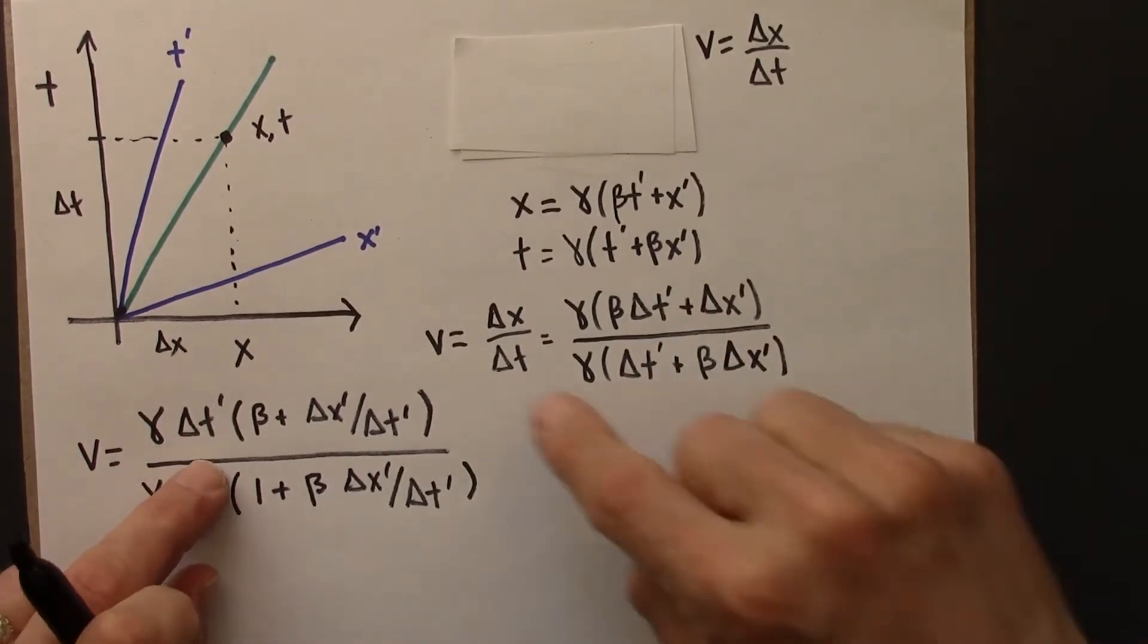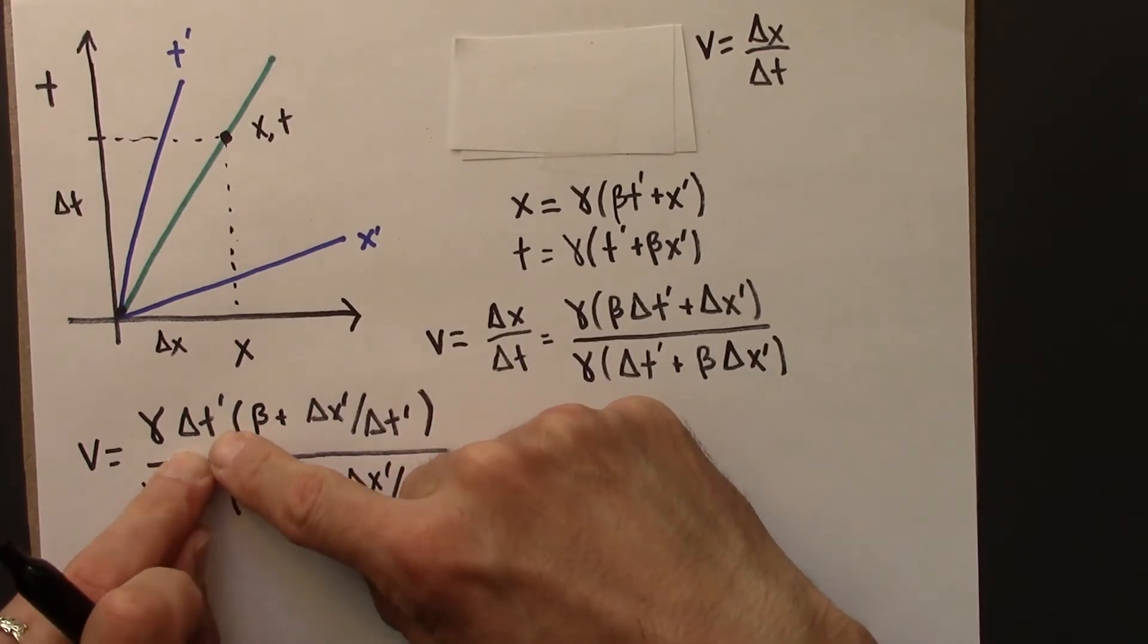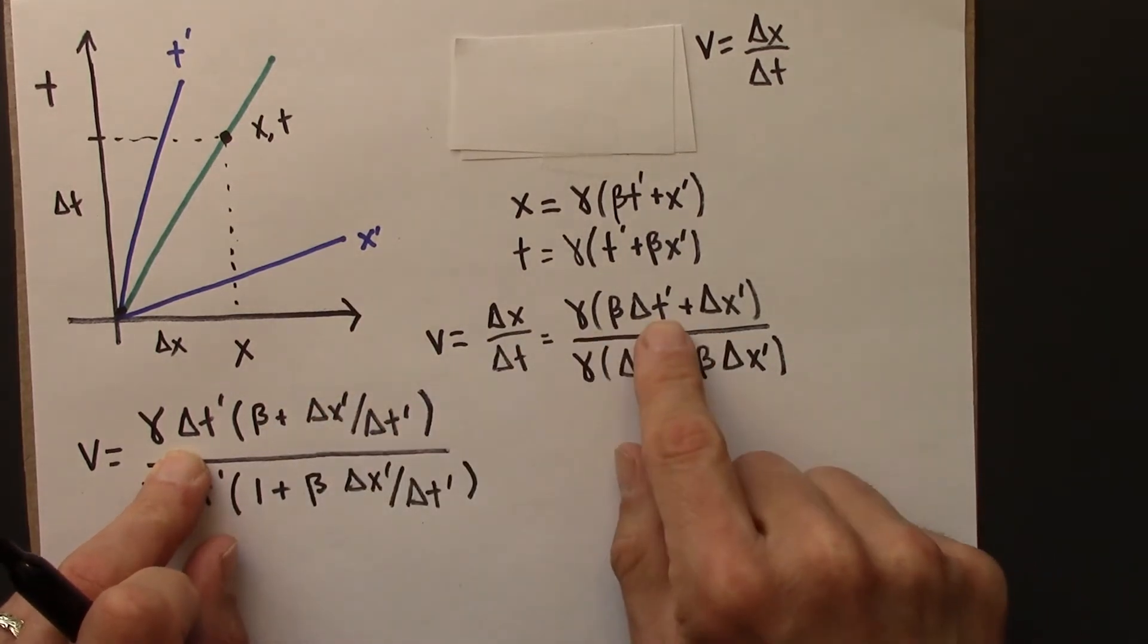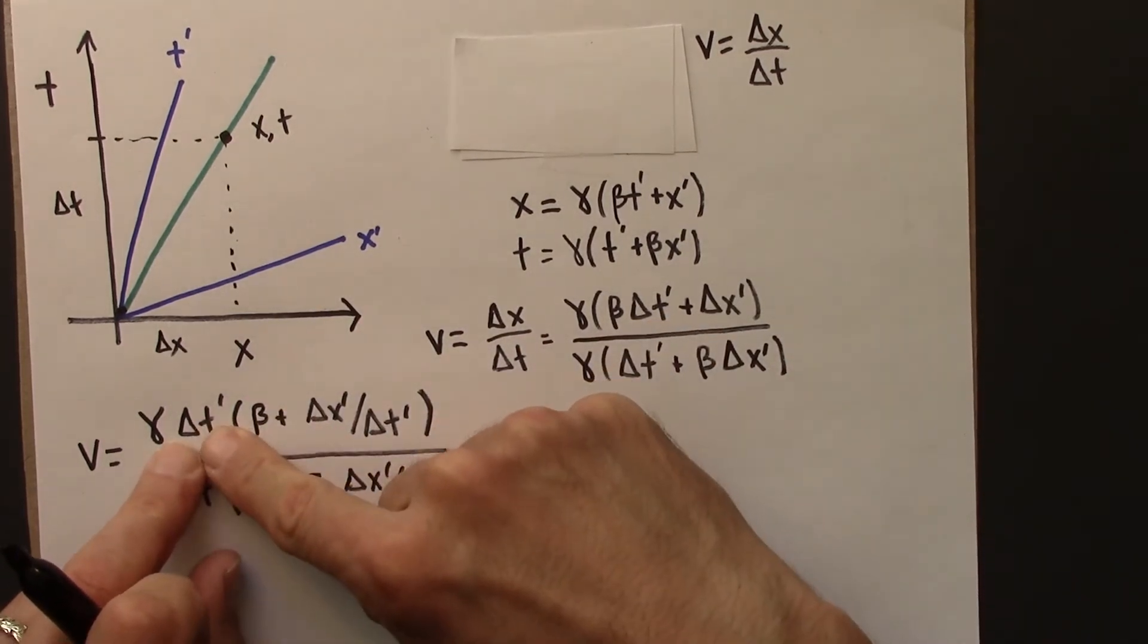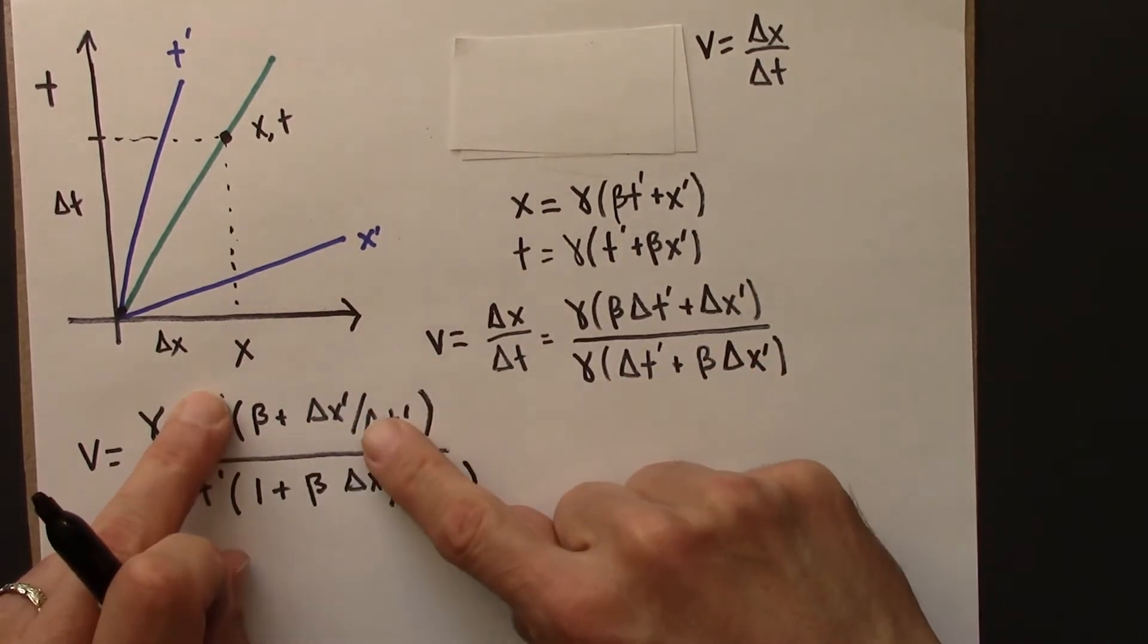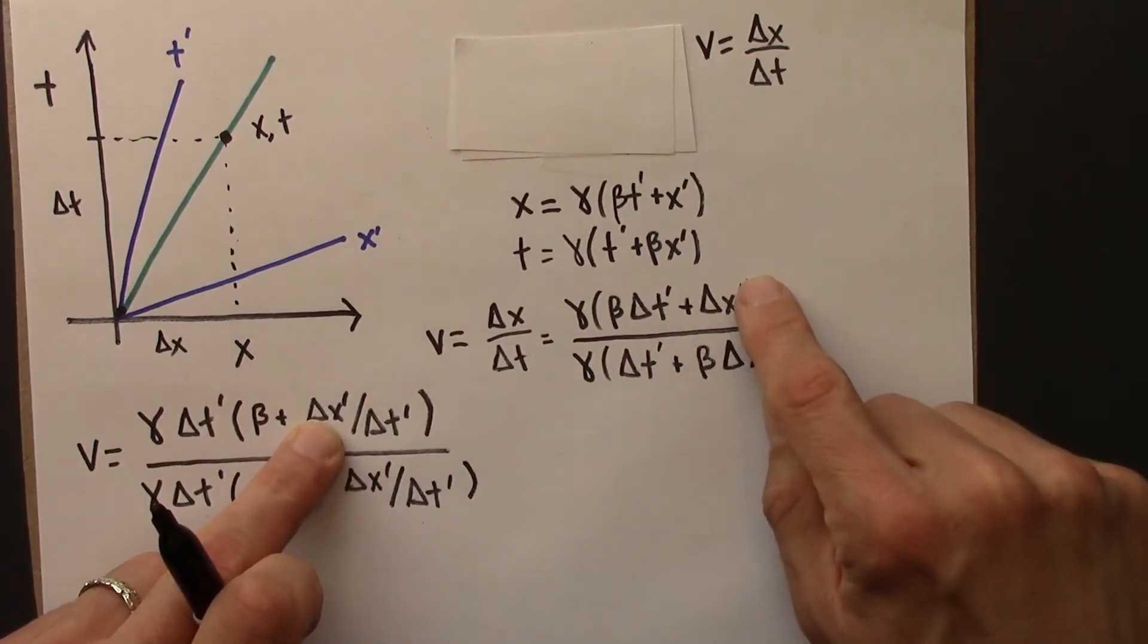So to see that this is a legal move, let's imagine going backwards. I'd have to distribute the delta t prime. So delta t prime times beta is beta delta t prime. Delta t prime times delta x prime over delta t prime. Well, I've got a delta t prime on the top and the bottom. That's just going to take me back to delta x prime, which is this.